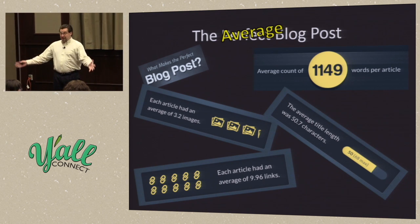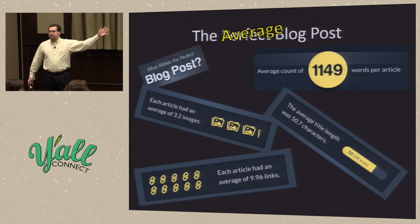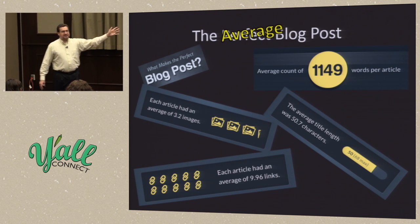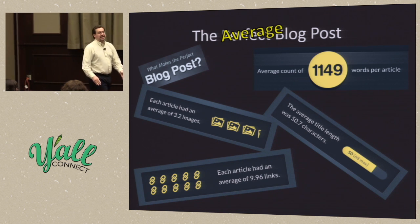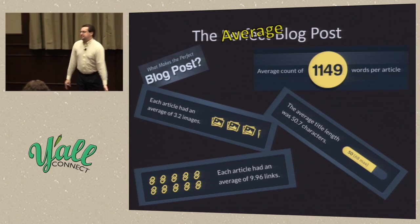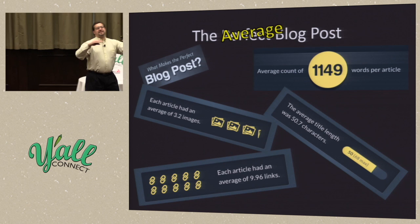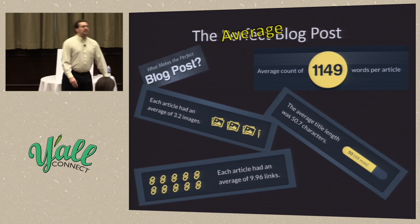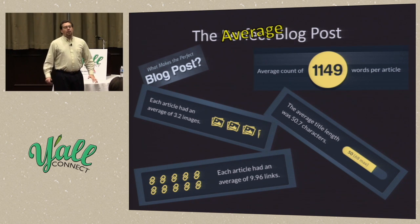You want some examples? This is post-lunch, so I'm going to try and wake you up here. You want some examples of what happens when you get stuck in a container. That container can be length. That container can be: we've got to have this many pictures, we've got to have this many links, we've got to tweet it this many times. The container might be something like: we've got to have it as a list.